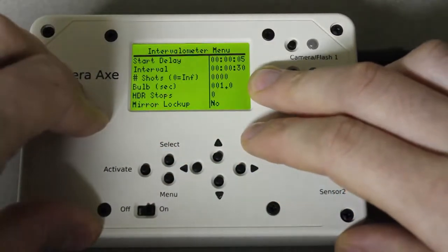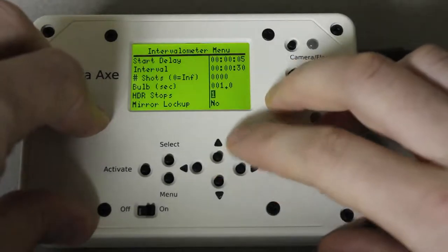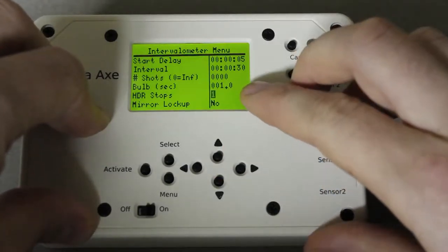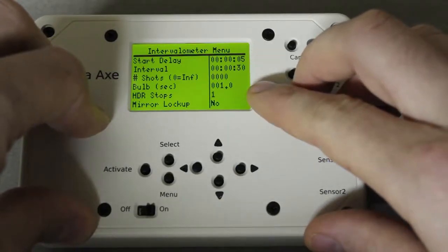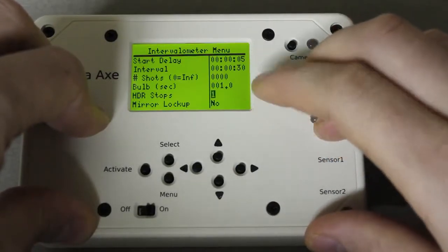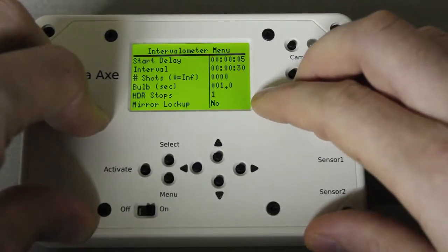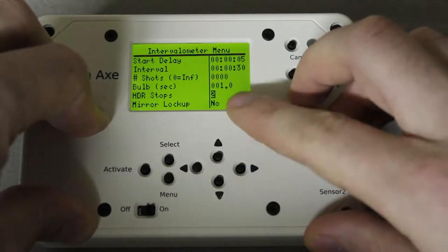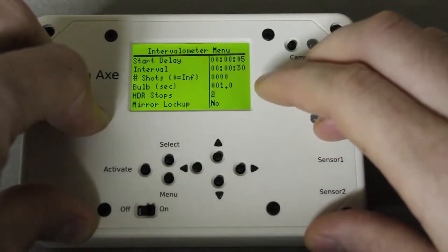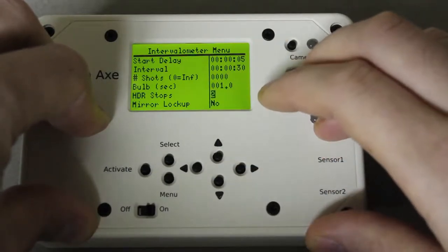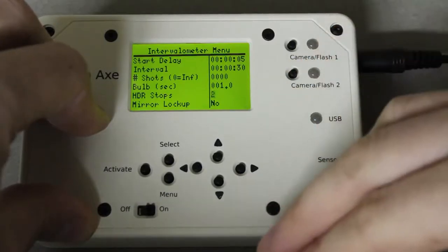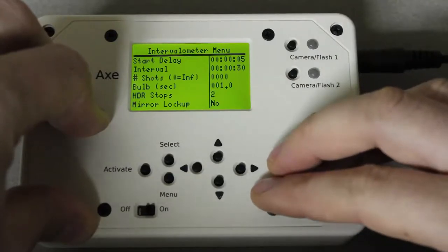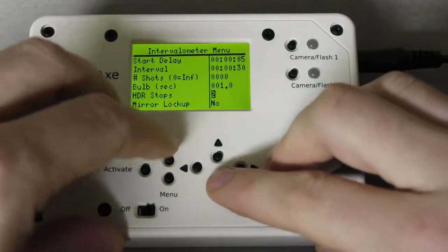So basically what it will do is if you set it to 1 and you have the bulb set to 1 second, it would take a photo with a bulb setting of 1 second and then it would take a second photo with a bulb duration of 2 seconds. And if you set it to 2 then it would take a third photo with a duration of 4 seconds. So it's going to keep doubling the amount of time which equals one stop in photography of light. So it's a pretty convenient way to do things.